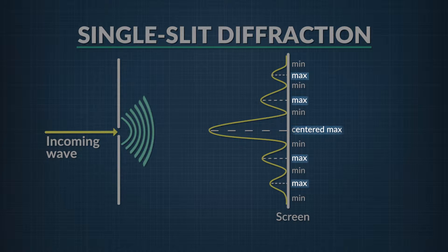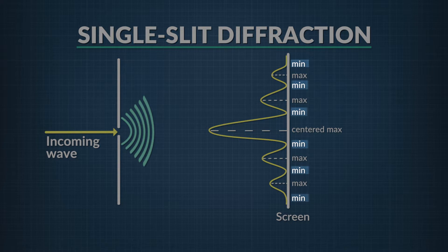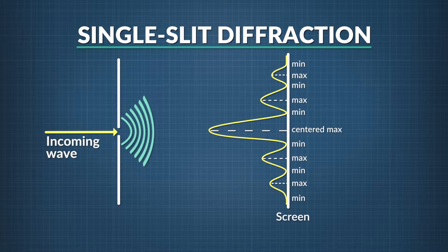When you send a wave through a single slit onto a screen, you get a pattern of bright areas on the screen, called maxima, that alternates with areas of dark, called minima.